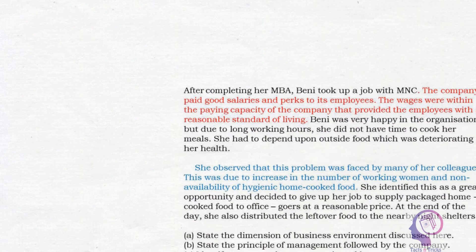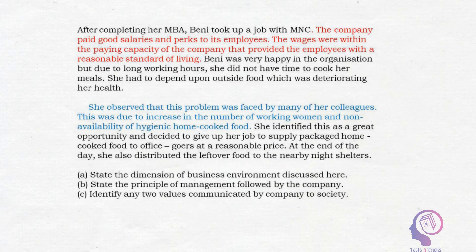From this question, we have to identify three things. Number one, the dimension of business environment mentioned here. Number two, the principle of management followed by the company. And number three, two values communicated by the company to society. The key lines which will help us recognize all three things are highlighted in red and blue.